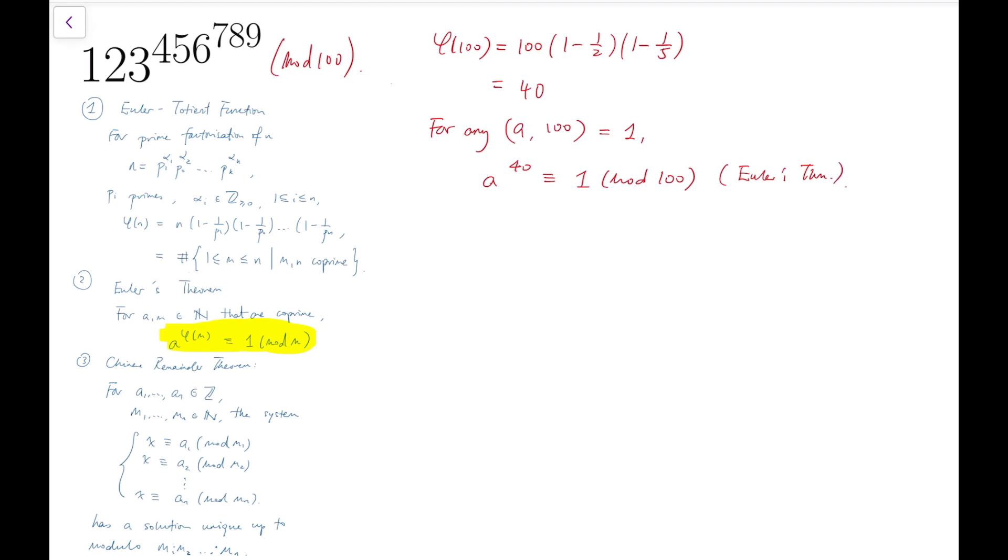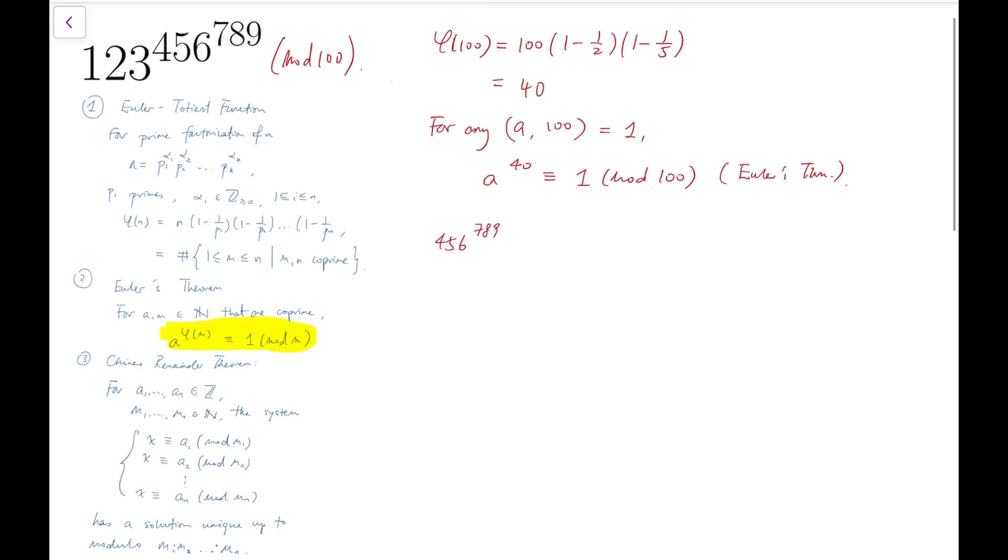So with this result, I turn to find this number 456 to the power of 789 mod 40, and that's congruent to 16 to the power of 789 mod 40. Now there are two ways to compute this. The first one is to notice that because 16^1 is congruent to 16 mod 40, if I multiply this by 16, which is 16 squared, then that's 256, and at the same time it's congruent to 16 mod 40.